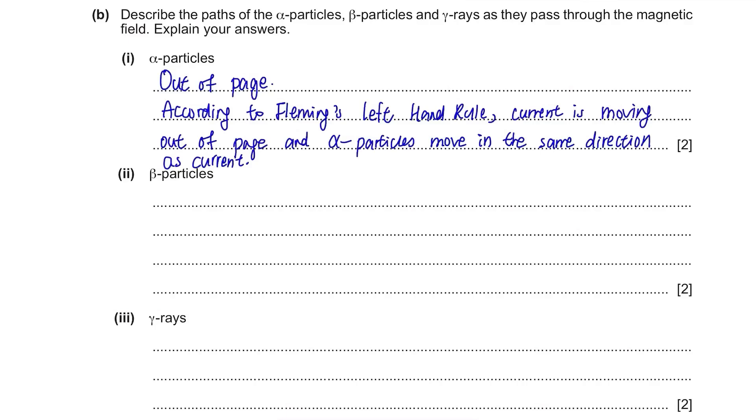Beta particles move in the opposite direction of alpha particles. From the above question, we found that alpha particles move out of the page, so beta particles will move towards the page. Gamma rays will just continue going in a straight line as gamma rays are uncharged and they are not equivalent to current.